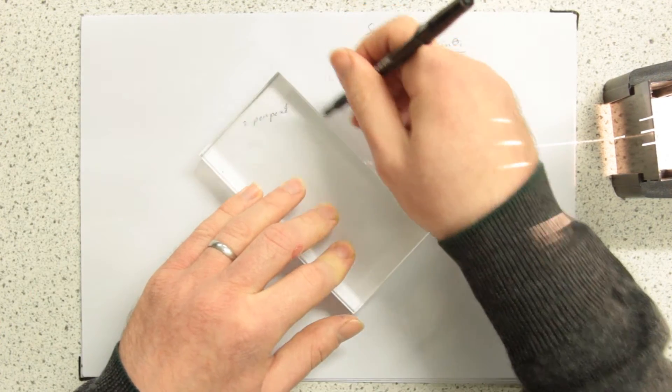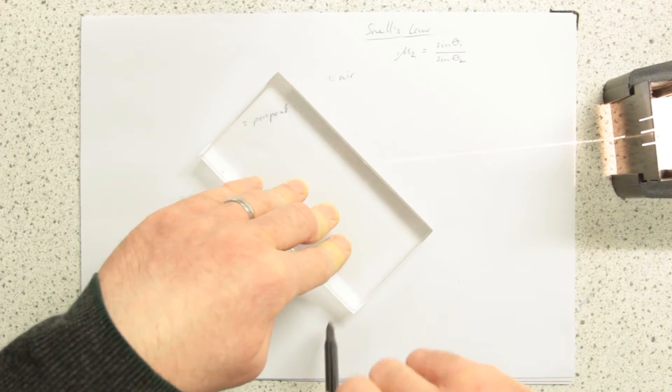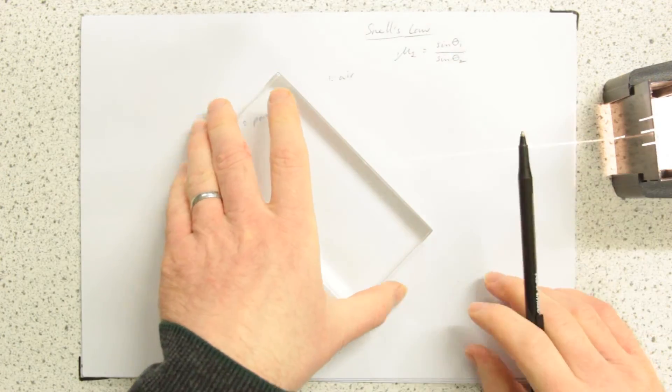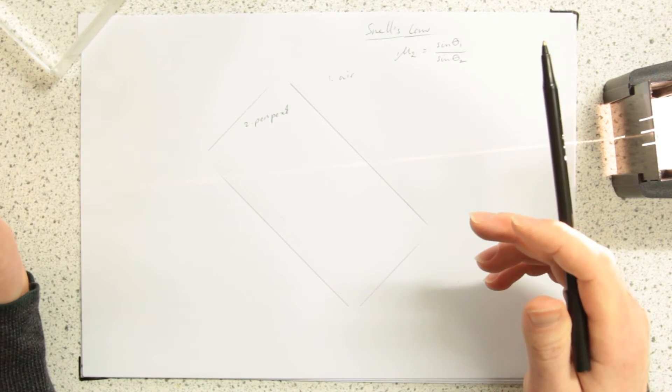So I'm going to draw around my block so I know exactly where my different boundaries are because you'll remember from your GCSE the refraction happens at a boundary between two mediums.